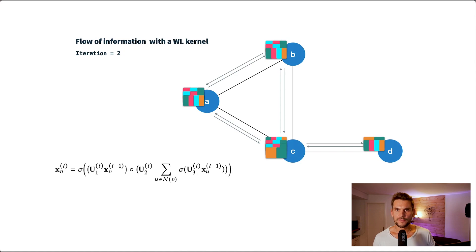The key insight of HashGNN is that it replaces the three neural networks with three hashing schemes, thereby circumventing model training and running much faster.